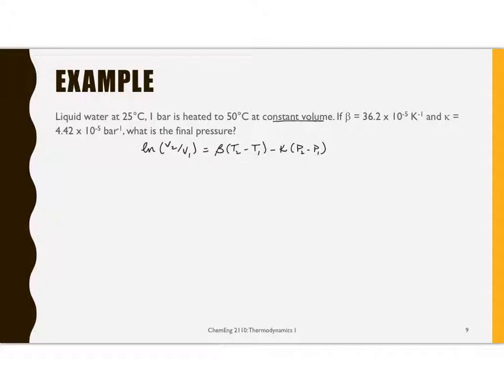In this case, we're saying constant volume, therefore, this V2 over V1 is 1, log of 1 is 0, so this group is 0. And T2 and T1 are known, P1 is known, kappa and beta are known. So this simply becomes P2 equals beta times T2 minus T1 over kappa plus P1.